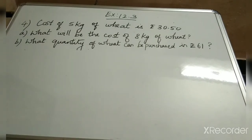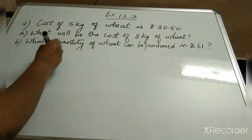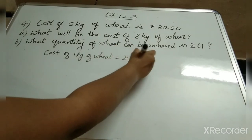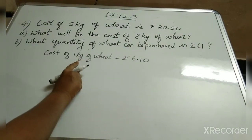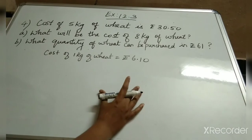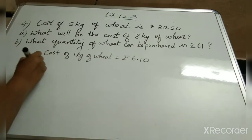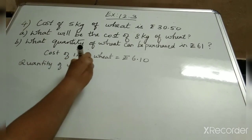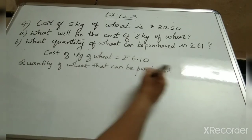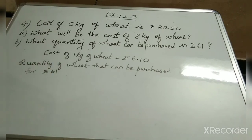Subdivision (b): What quantity of wheat can be purchased for rupees 61? In our subdivision (a) we found out the cost of 1 kilogram of wheat — it is equal to rupees 6.10. Now, for 61 rupees, what quantity are we going to purchase? We are going to find the quantity of wheat that can be purchased for rupees 61.